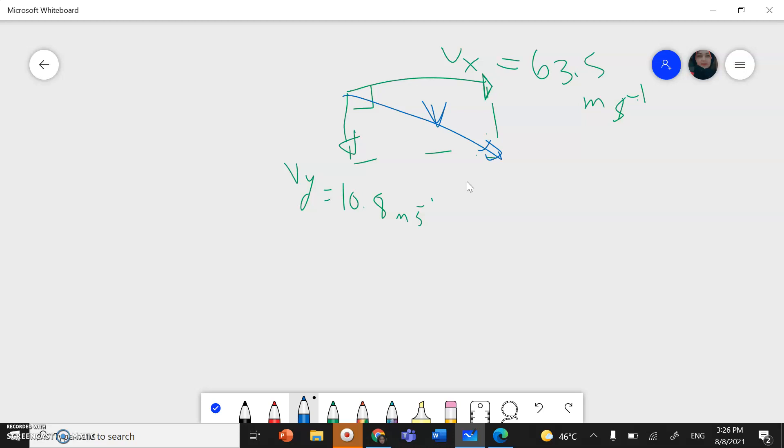I can use Pythagoras theorem. So V will equal V in x direction square plus V in y direction square. And this will equal 63.5 square plus negative 10.8 square. And this should give me 64.4 meter per second.